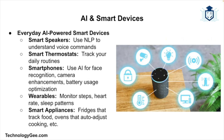Here are some everyday examples. Smart speakers like Amazon Echo, Google Nest, or Apple HomePod use natural language processing to understand your voice, answer questions, play music, control your lights, and learn your preferences over time. Smart thermostats like Nest can learn when you leave and return home, adjust temperature automatically to save energy, and predict your comfort preferences over time.